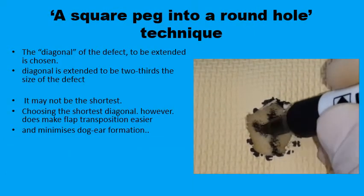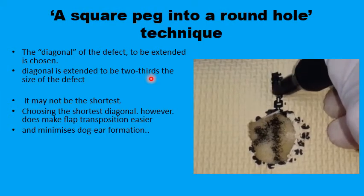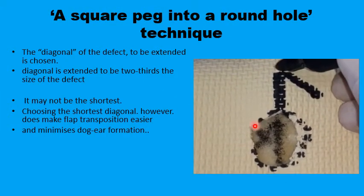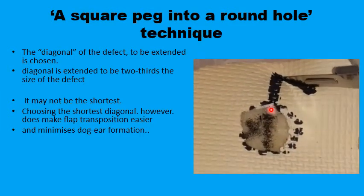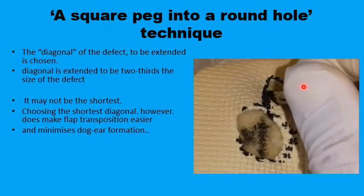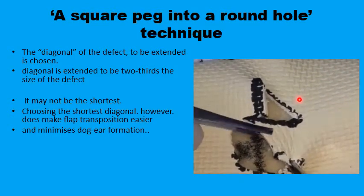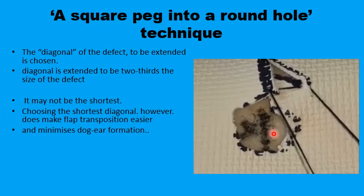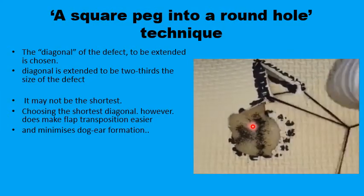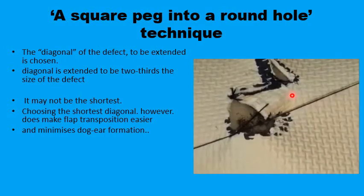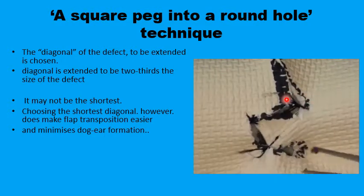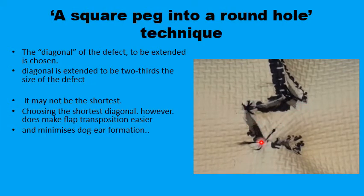Another variant is the square peg into the round hole variant described by Quaber. Here you do not draw any parallelograms outside the circular defect. You simply extend one of the diameters two-thirds of the way up, and from it draw a limb at a 60-degree angle, also two-thirds of X in length. This gives a small parallelogram to be transposed into the circular defect. Maximum tension is at the suture between the base of the flap and the defect. Once the leading edge is placed, the lateral limbs are sutured, and both the primary and secondary sides are closed.